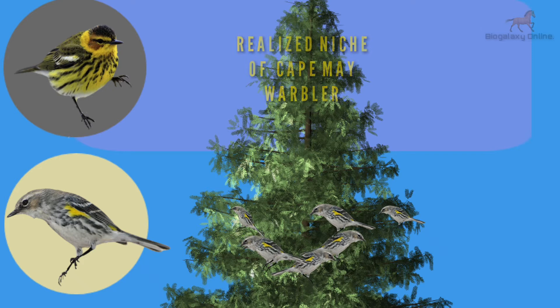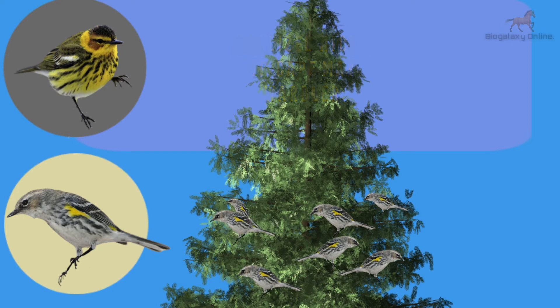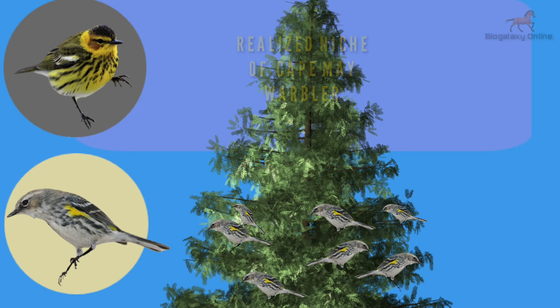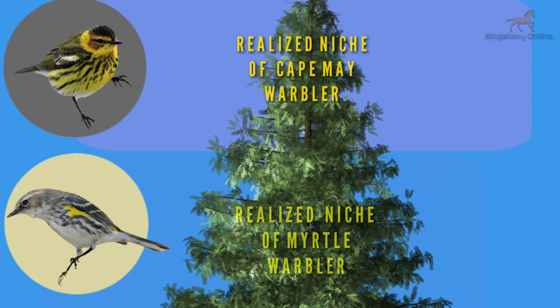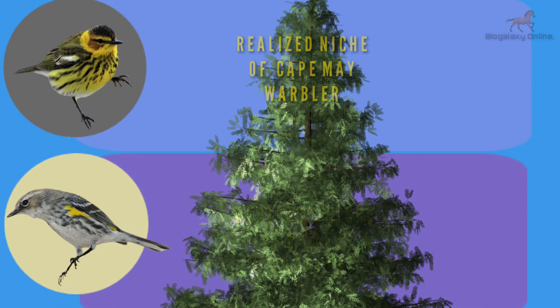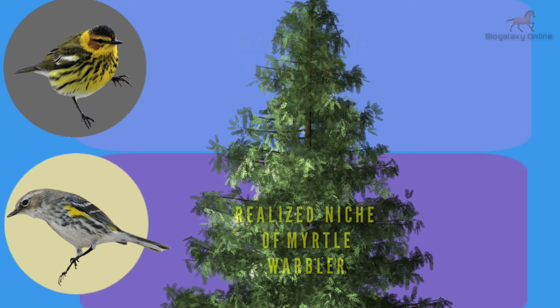So the realized niche of Cape May warbler is the upper branches of the tree, and the realized niche of Myrtle warbler is the lower branches of the tree. Realized niche is actually the post-competitive niche.